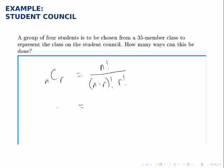In this case, n or the number that we're choosing from is 35, and r or the number we're choosing is four. So we choose four students from this group of 35. So n factorial is 35 factorial, n minus r is 35 minus 4 or 31, and r is 4.